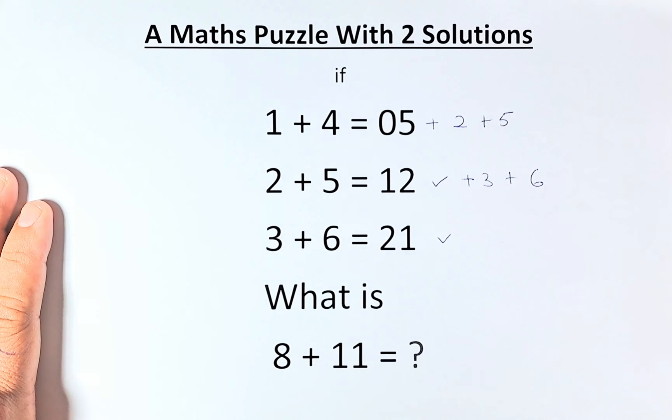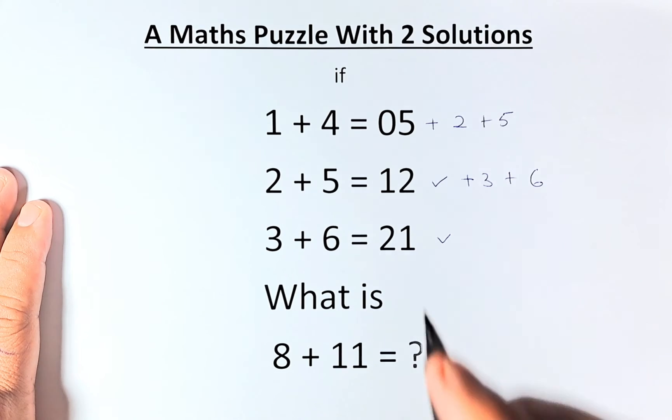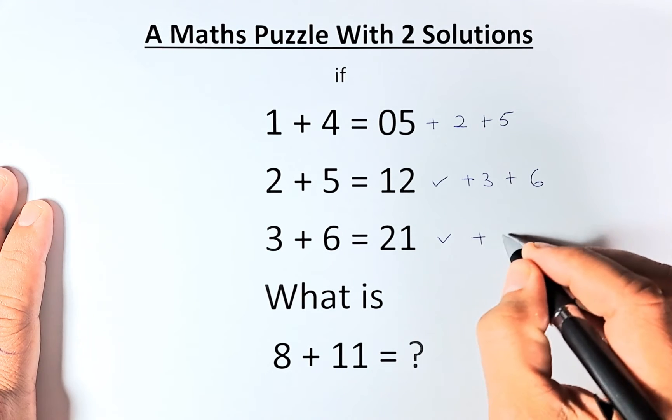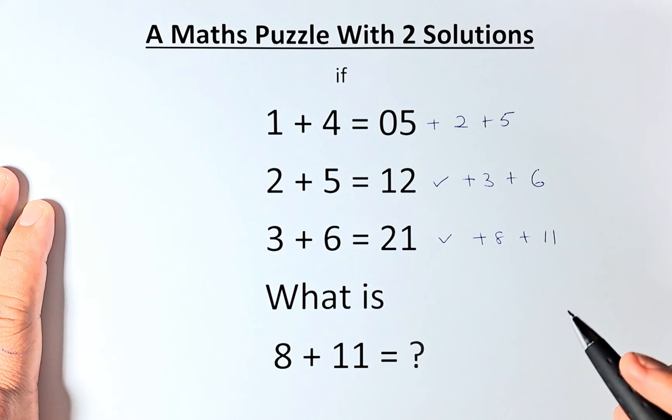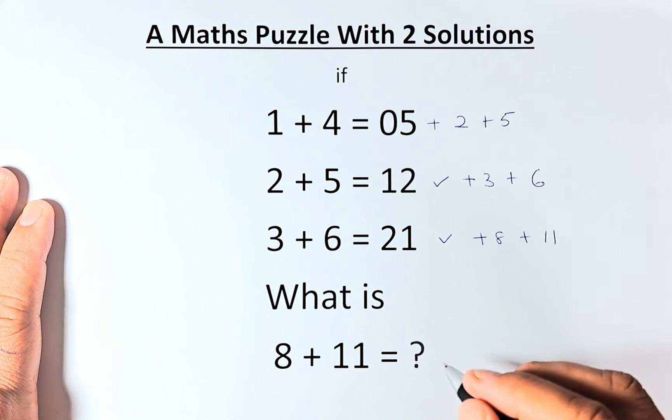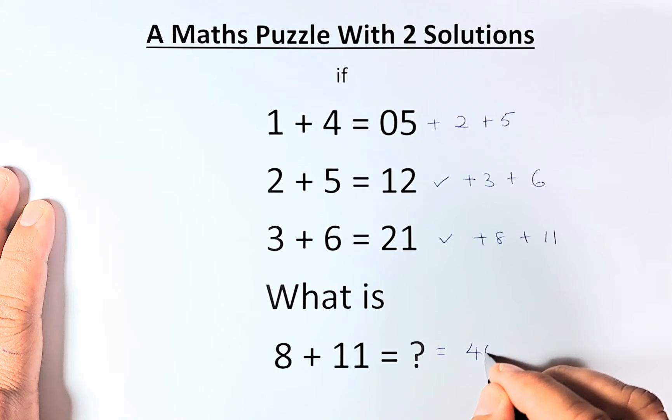So what is 8 plus 11 equals? It will be 21 plus 8 plus 11. So 21 plus 8 is 29, 29 plus 11. The first answer is going to be 40.